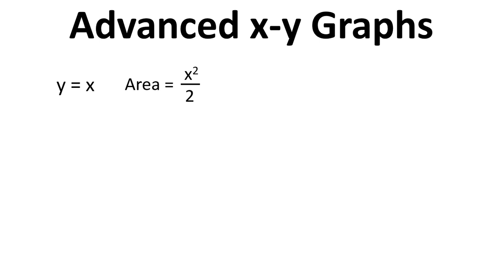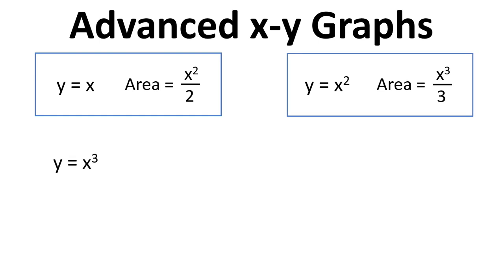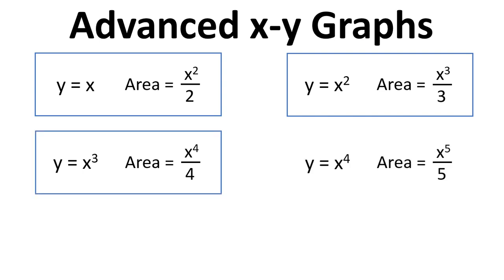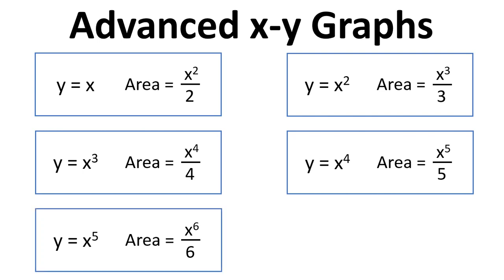So we saw that for y equals x, the cumulative area is given by x squared over 2. We just saw also that the cumulative area for x squared is x to the 3 over 3. If we'd carried on and looked at y equals x cubed, we'd see that the cumulative area is x to the power of 4 divided by 4. x to the 4 gives us cumulative area of x to the 5 over 5. x to the 5 is x to the 6 divided by 6 for the cumulative area. And I hope you can see a pattern emerging now, because as scientists, engineers, mathematicians, we like to find patterns and make generalisations. So the general pattern here is that for y equals x to the n, the area is x to the n plus 1 divided by n plus 1.